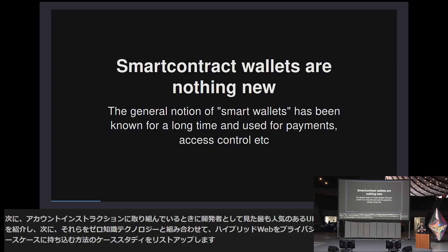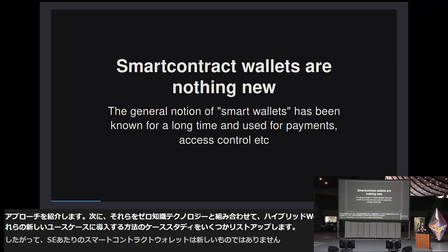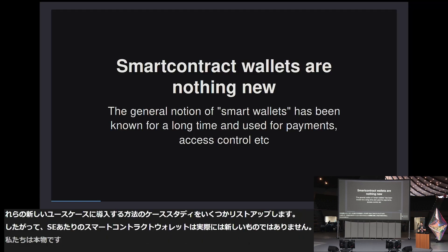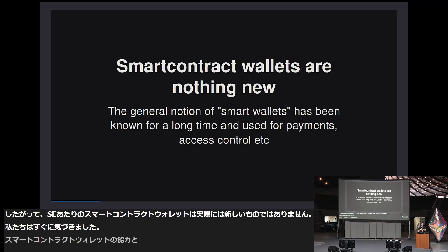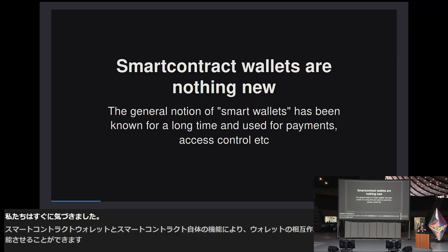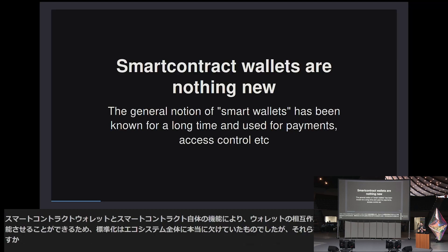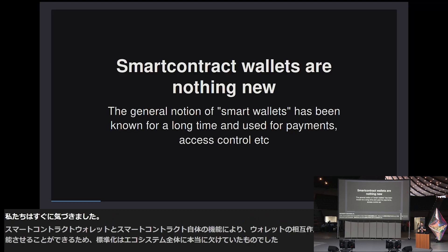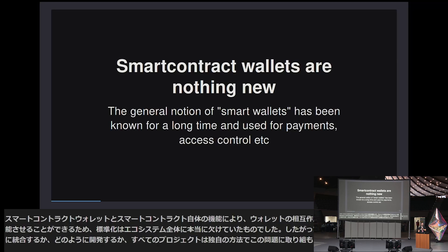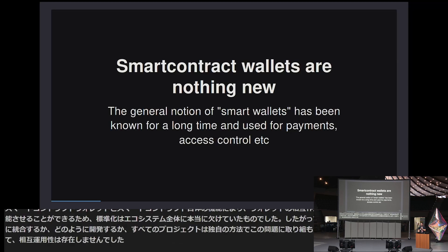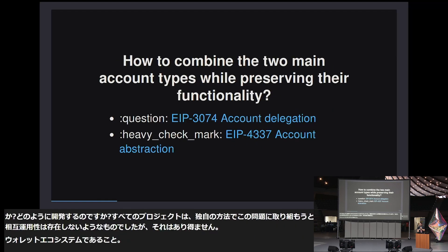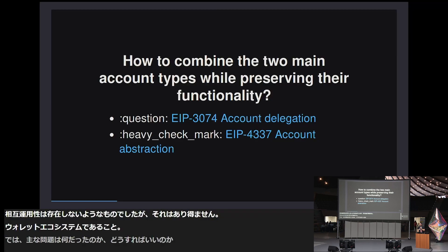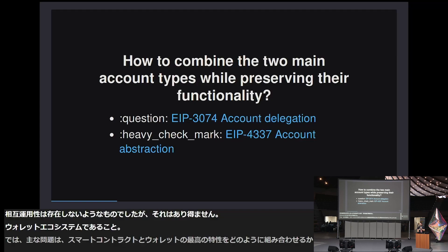Smart contract wallets per se are nothing new. We realized immediately that smart contracts could drive wallet interactions acting as a proxy. The standardization was the thing that was really lacking in the whole ecosystem — how do you integrate them, how do you develop them? Every project tried to tackle this problem in their own ways, so interoperability was kind of non-existent. The main problem was how do we combine the best properties of a smart contract and a wallet — an externally owned account.